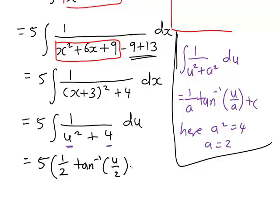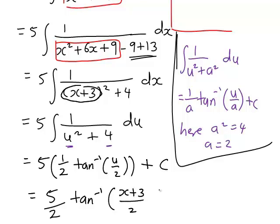And as usual just add our arbitrary constant c once we evaluate the integral. The final step is simply to replace u with an expression in terms of x. Recall that we let u equal x plus 3. So substituting that back in, we find this integral becomes 5 times a half, that's just 5 divided by 2, inverse tan of (x plus 3) divided by 2 plus constant c.